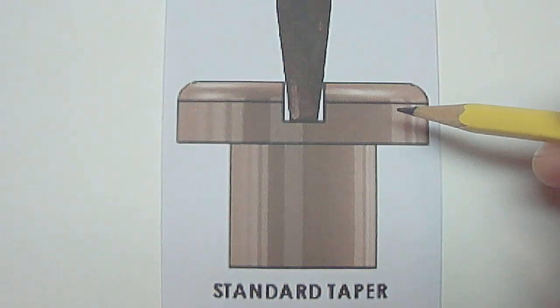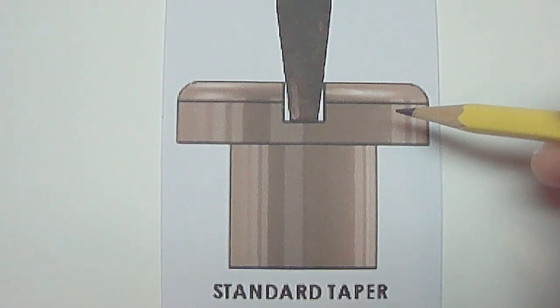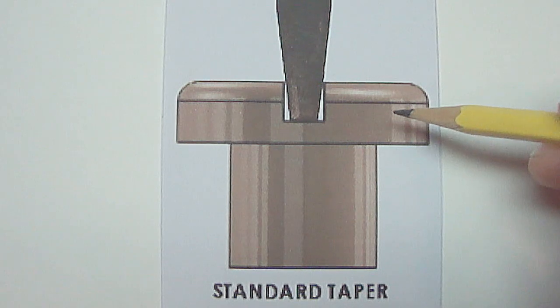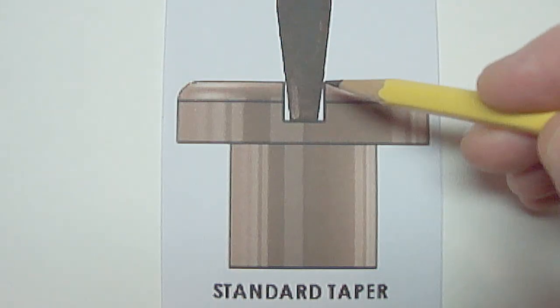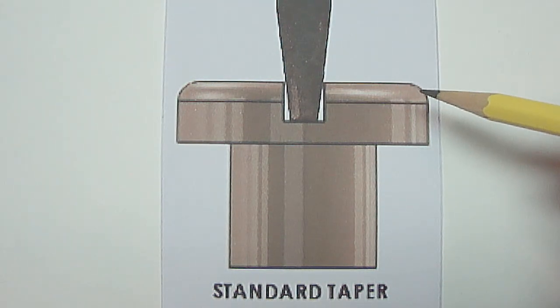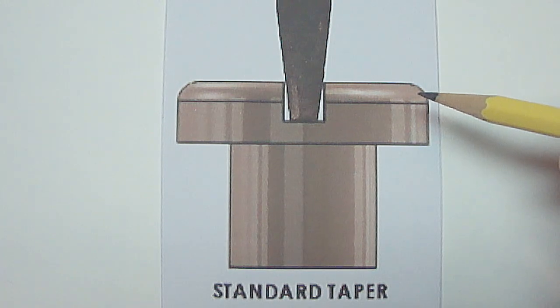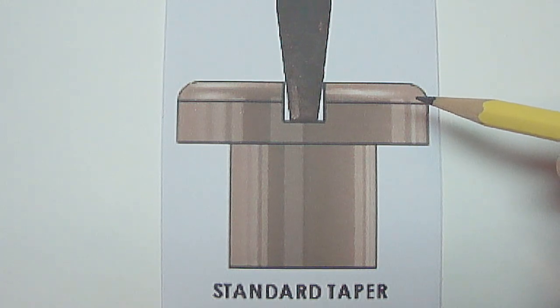The problem with a standard taper is no matter what size you use, it creates high pressure points at the top of the wall starting at the outer edge here and here, which starts damaging and mushrooming the top of the screw head. This gradually becomes worse, making it more difficult or even impossible to tighten or loosen.